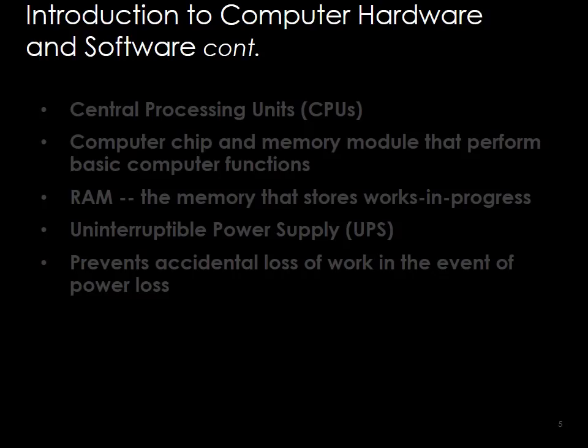The computer chip and memory module perform basic computer output functions, and random access memory stores works in progress. The uninterruptible power supply is essentially a battery — if the power in your building goes off, it takes over and continues to feed power to the computer. Usually a laptop has a battery already, so if the power goes off it doesn't affect it. But workstations do not have batteries, so this is like a battery for a workstation that prevents accidental data loss in the case of a power failure.